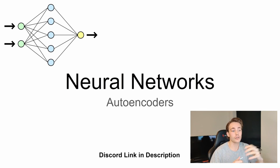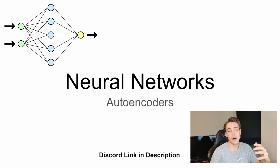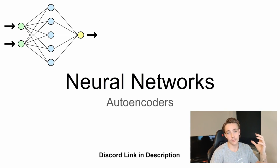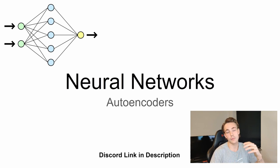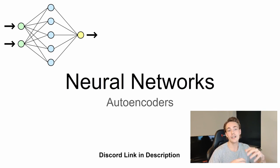Welcome to a new video in this neural networks tutorial. In this video we're going to talk about autoencoders - what they are, what they can be used for, and at the end we'll see an example of how to create our own autoencoders. We encode some data to compress it, then decode it again to reconstruct information from fewer features. For example, an image can be downsampled to a feature vector, and then decoded to reconstruct the original image - useful for compression.